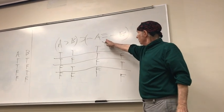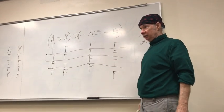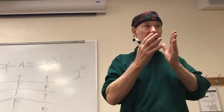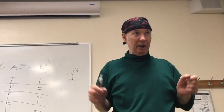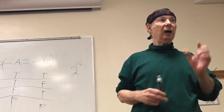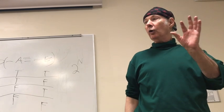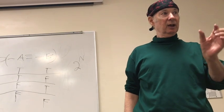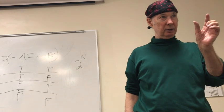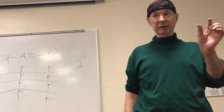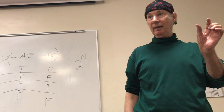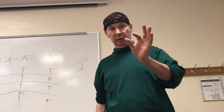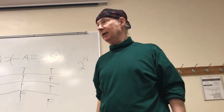The column underneath the main truth function gives us the truth value of the whole sentence. The columns underneath the other truth functions give us the truth values of those components. That is why we need to know the order: the earlier we use a truth function, the earlier that column gets filled in, until we reach the last truth function used — and that's the last column that gets filled in.